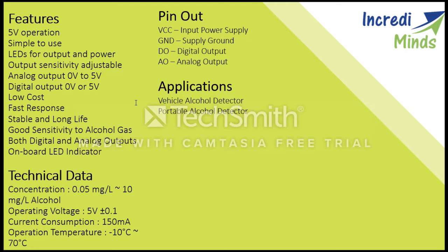What is the difference between analog and digital output? The analog output gives a range from 0 to 5 volts, whereas the digital output can only give 0 volts or 5 volts — it works like a switch, while analog output gives a variable voltage. Key features include: very low cost, fast response, stable and long life, good sensitivity to alcohol gases, both digital and analog outputs, and an on-board LED indicator.